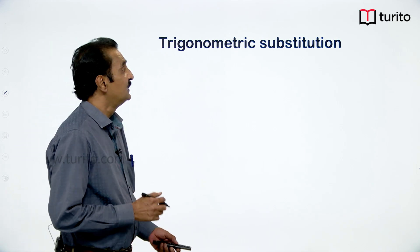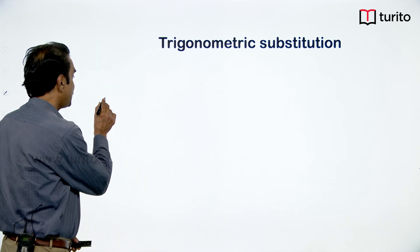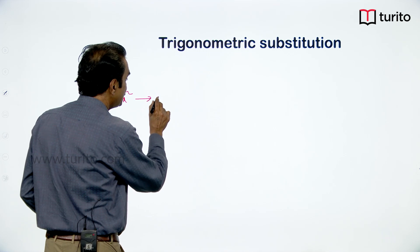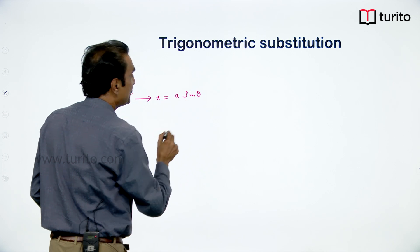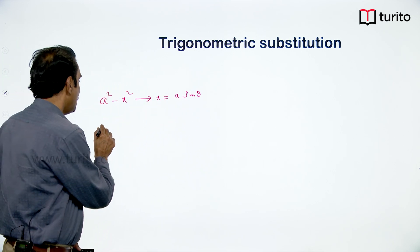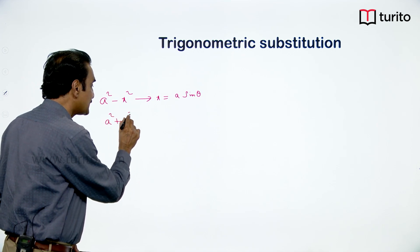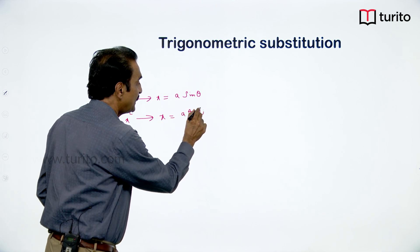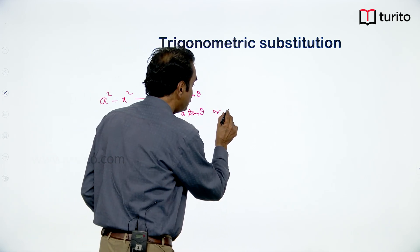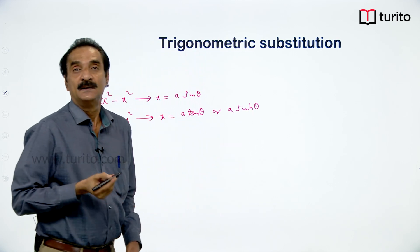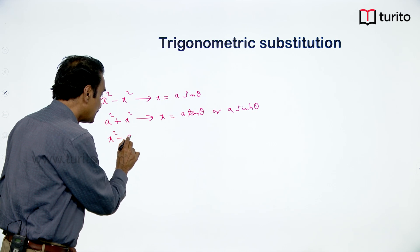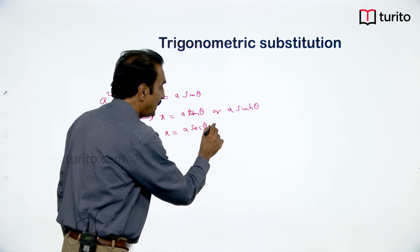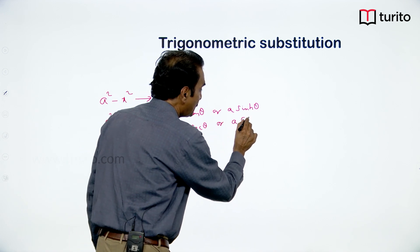Trigonometric substitution. In trigonometric substitution, we already discussed: if the integrand is in terms of a² minus x², we substitute x = a sin θ or x = a cos θ. If the integrand is in terms of a² plus x², we substitute x = a tan θ or a sinh θ. If the integrand contains terms of x² minus a², we substitute x = a sec θ or a cosh θ.